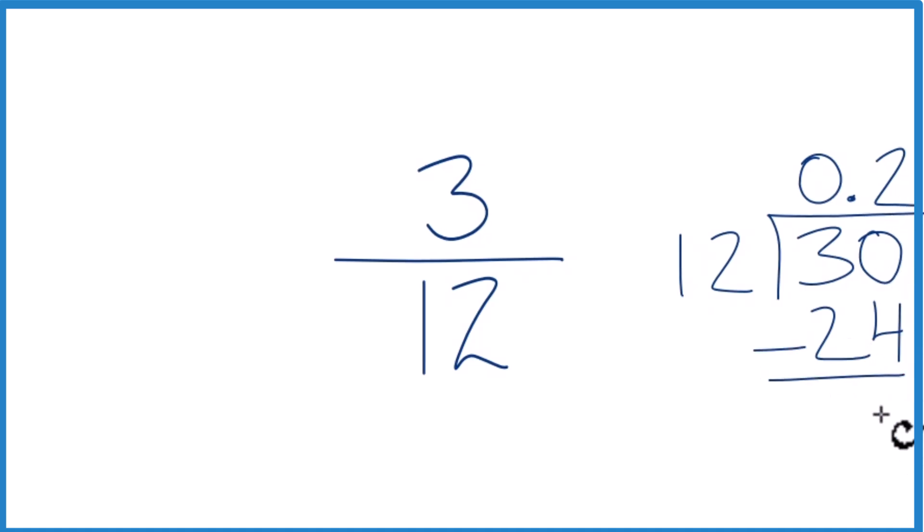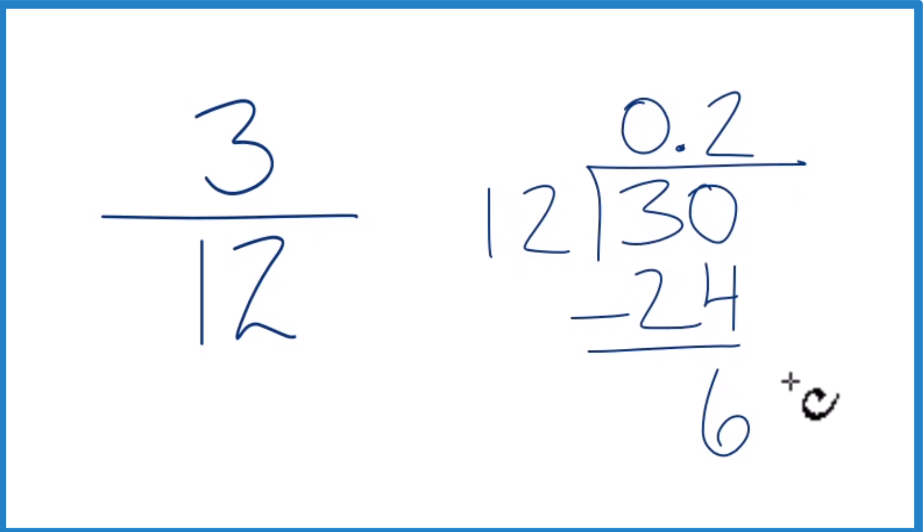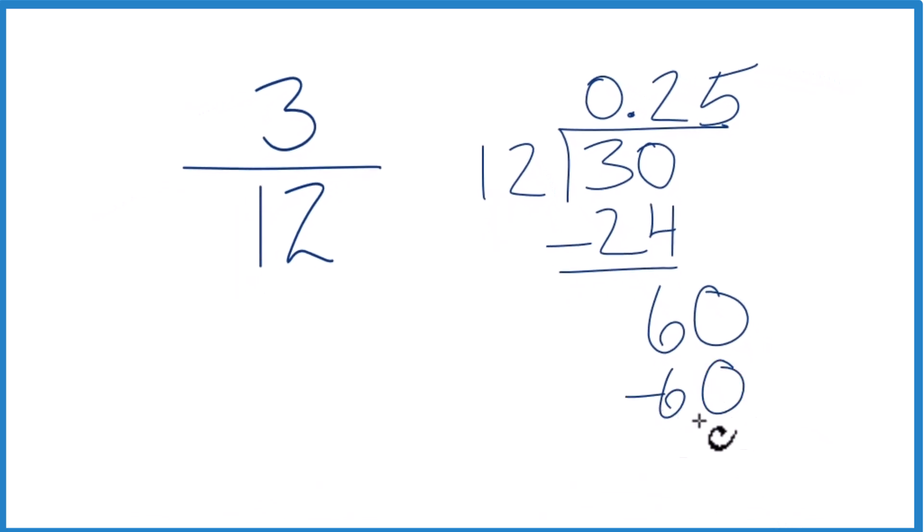30 minus 24, that gives us 6. 12 doesn't go into 6. We'll call it 60 and we'll move over 1. 5 times 12, that is 60. We subtract, no remainder.